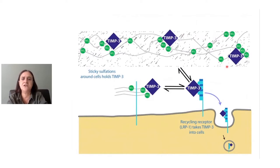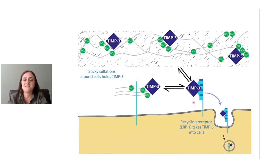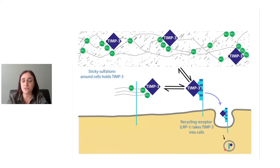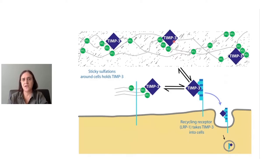What we found is that in cartilage, cells make TIM3 and send it out into their immediate environment. Once it reaches a certain level there, any excess TIM3 is recycled back into the cell. This happens because TIM3 binds to a recycling label on the cell surface, and is then taken up into the cell and destroyed. So TIM3 is constantly made and recycled so that there's just enough TIM3 in the right place at the right time. We found that it's held in the environment around cells because it binds to sticky chemical groups called sulfations — these act like a kind of Velcro that holds TIM3 and some other molecules in this environment around the cell.